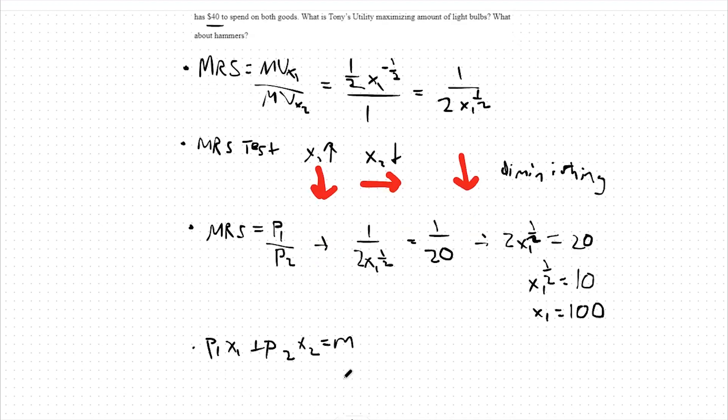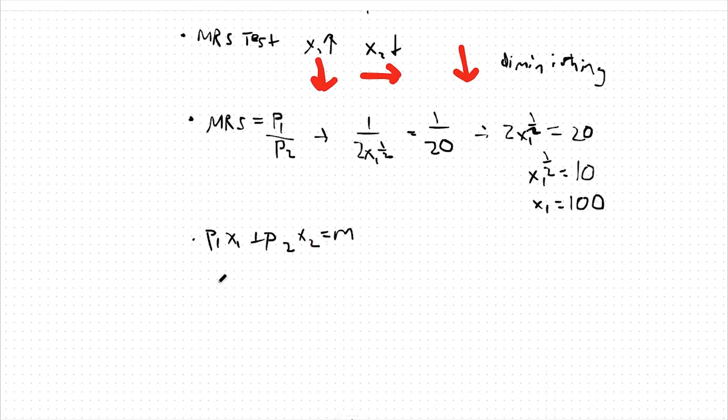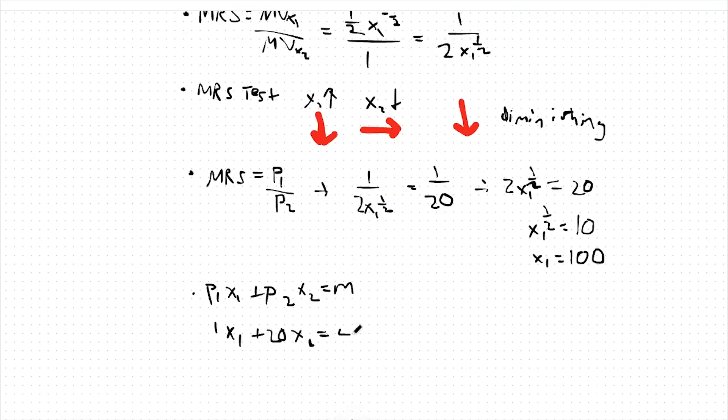Plugging in using the variables we have available to us, our price of good 1 is $1, so 1x1. Our price of good 2 is $20, so 20x2. And our income is $40, so 40 here.